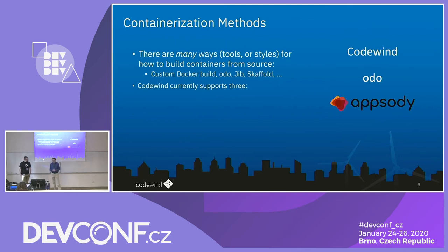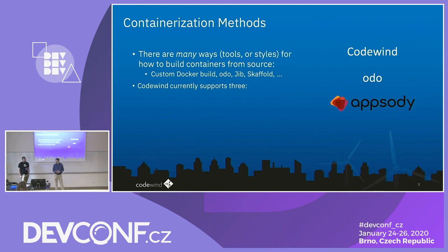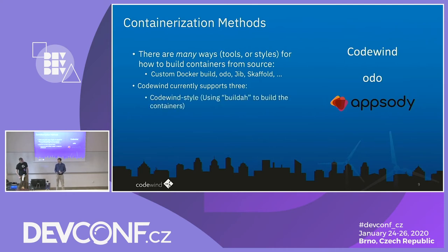There are many styles for building applications. I'll list a couple: you can do a custom Docker build, you've got Odo which is an OpenShift CLI, and Scaffold is another one. Codewind is build-structure independent — we currently support three different types of build systems. The first style is Docker containers, where you have complete flexibility. Your Docker files are part of your project, so you have full control over the environment.